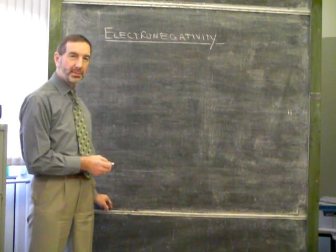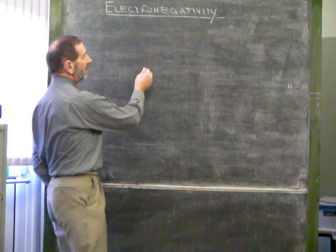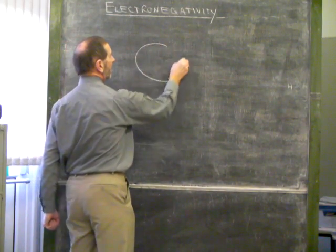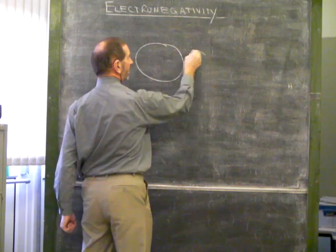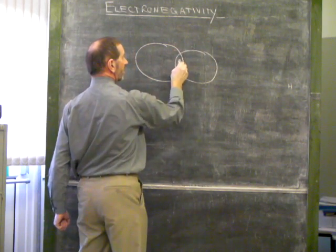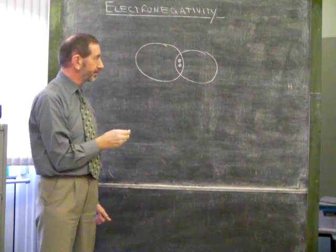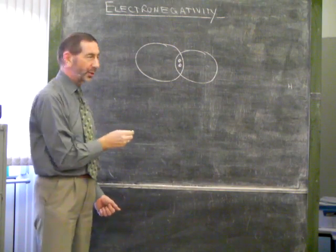Electronegativity. Big word, small idea. What it really means is how big an attraction an atom has for a pair of electrons in a bond.